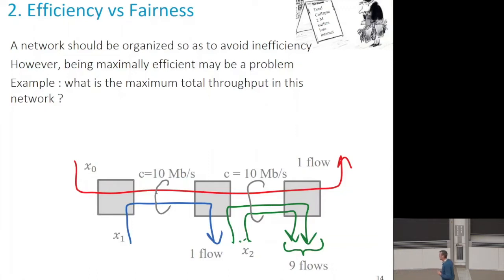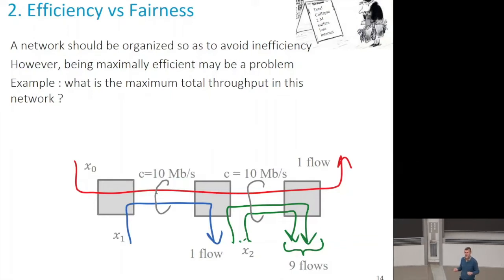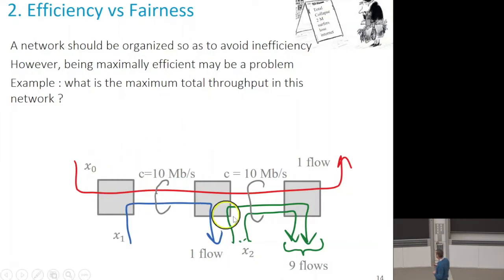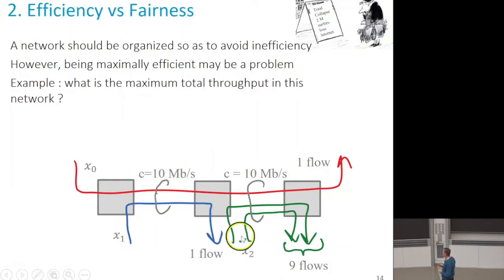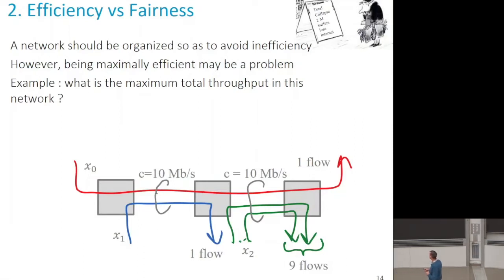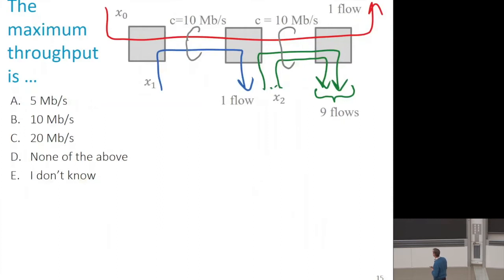Let's assume we are a network designer wanting to design a congestion control that is maximally efficient, avoiding the inefficiencies we've seen. Here's another network example — a feed-forward network. There are three types of flows: one red flow that uses two links at 10 megabit per second, one blue flow that uses the first link, and nine green flows that use the second link. Assume you have complete flexibility to allocate rates to sources using a central rate controller. What would be the maximal total throughput in this network?